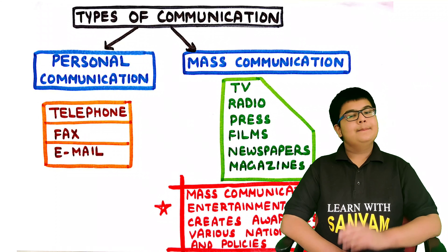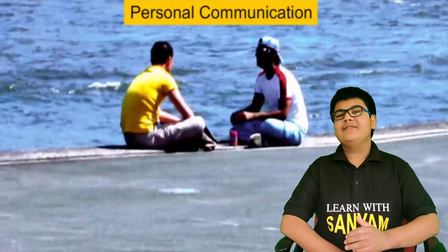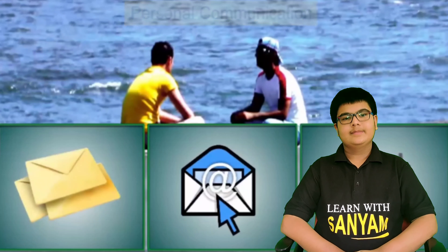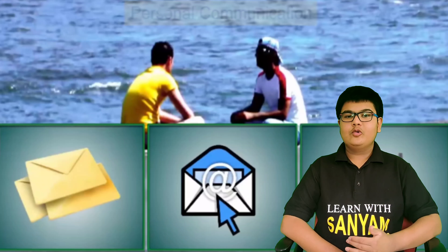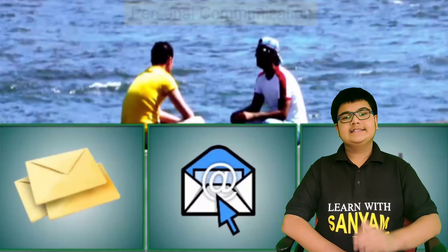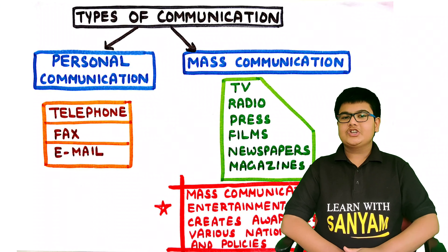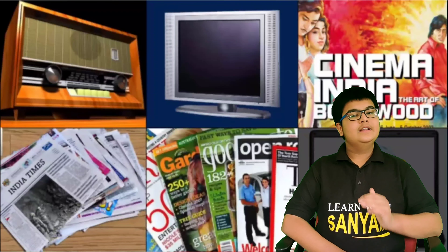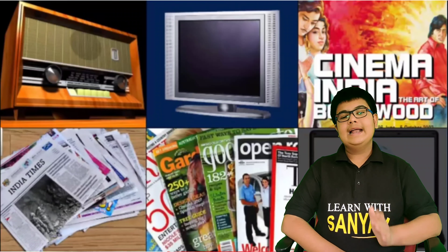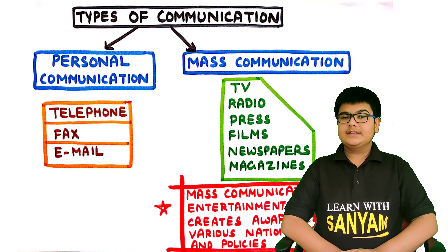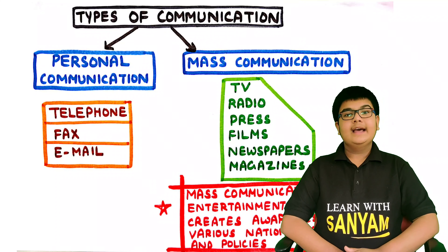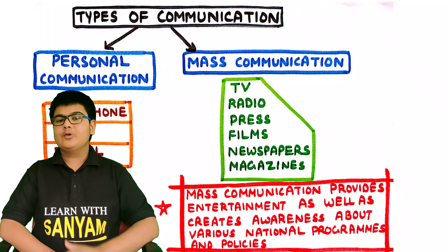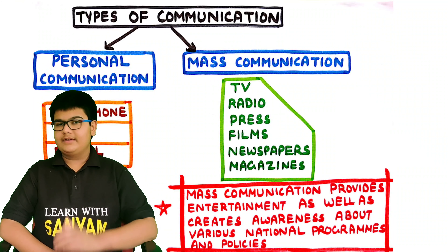As the name suggests, personal communication is done between two people or a group of few people. It is done through telephone, fax, email, etc. While mass communication includes television, radio, press, films, newspapers and magazines. Mass communication provides entertainment as well as creates awareness about the various national programs and policies of the government.